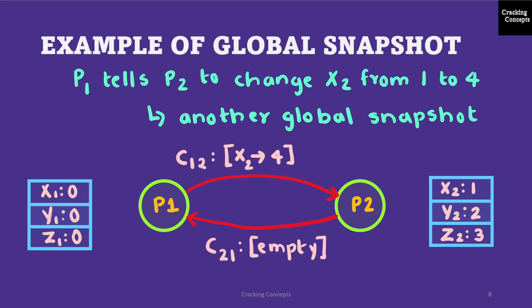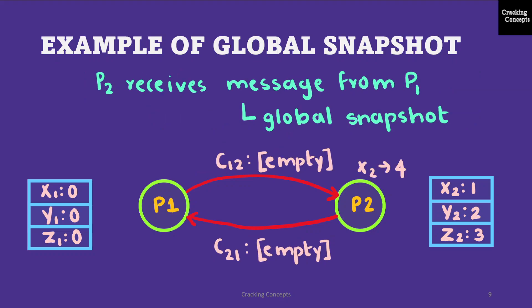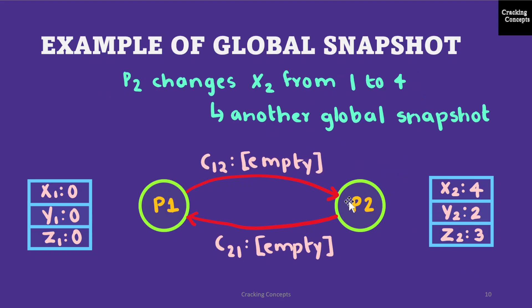Suppose that P1 wants to tell P2 to change the state of x2 from 1 to 4. It will send a message, which represents another global snapshot. Then P2 receives the message from P1, which is another global snapshot. Then P2 actually changes the value of x2 to 4, which is yet another global snapshot.